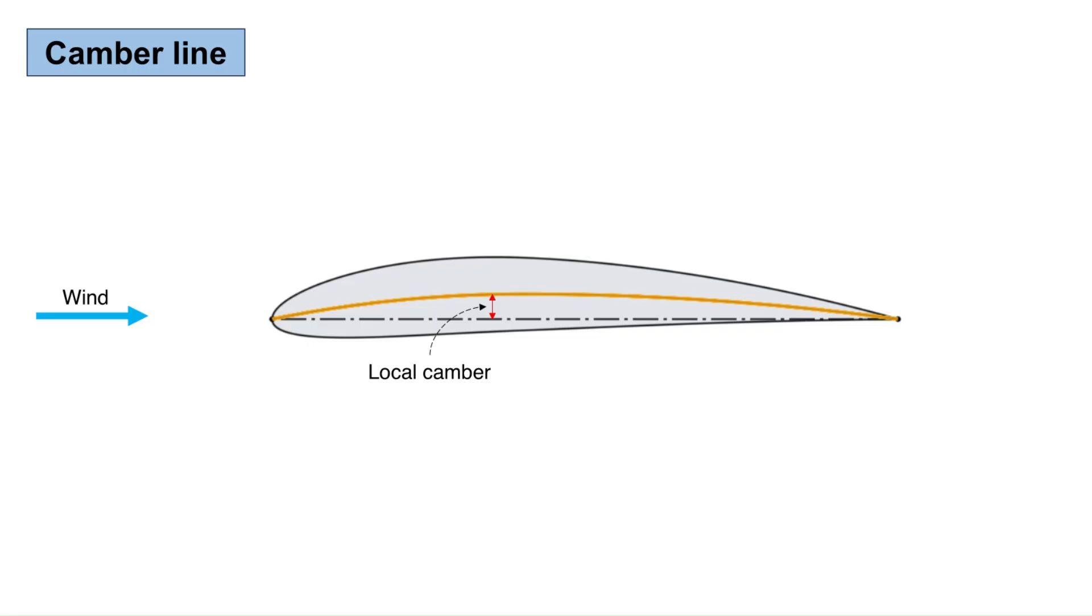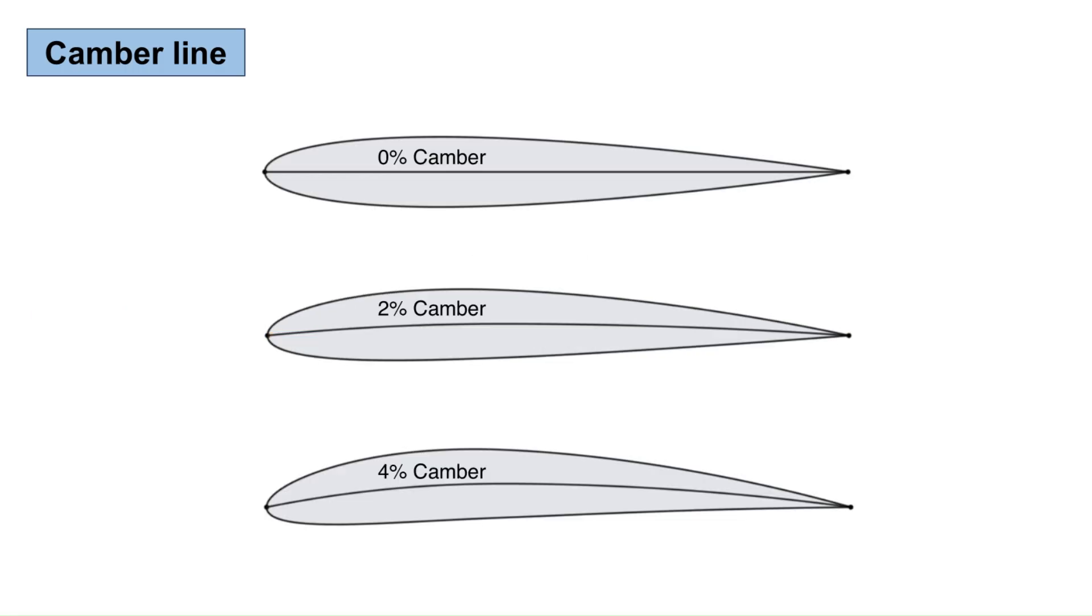The maximum value of the local camber is an important parameter in the evaluation of the airfoil. The camber is always expressed as a percent of chord. For example, if an airfoil has as the maximum value of local camber 2% of the chord, that airfoil is said to have 2% camber.